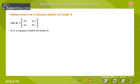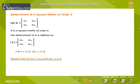A is a square matrix of order 2. The determinant of A is defined as determinant A equals determinant of A11, A12, A21, A22, that is equal to A11 into A22 minus A21 into A12.